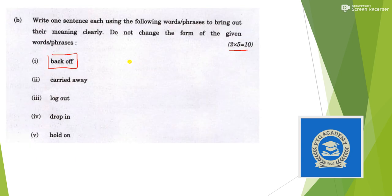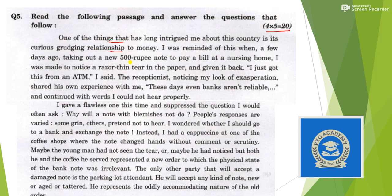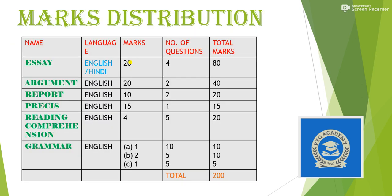To recap the marks distribution: Essay — 4 questions at 20 marks each = 80 marks; Argument writing — 2 questions at 20 marks each = 40 marks; Report writing — 2 reports at 10 marks each = 20 marks; Precis writing — 1 question = 15 marks; Reading comprehension — 5 questions at 4 marks each = 20 marks; Grammar — 25 marks. Total: 200 marks, to be completed in three hours.